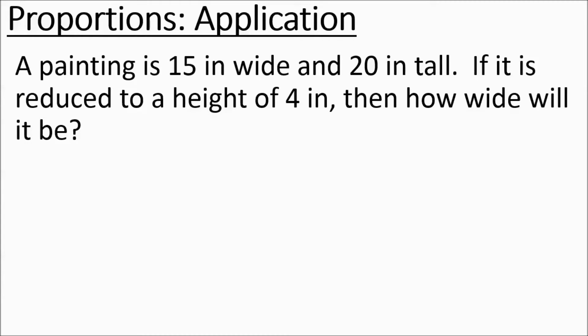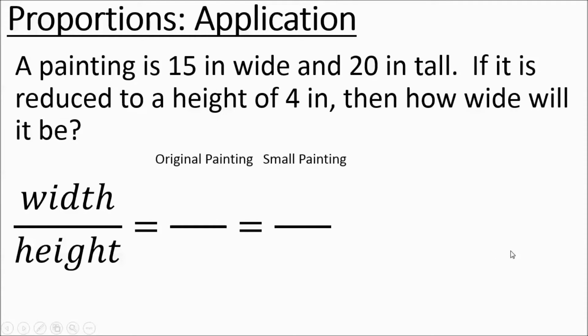You want to set up what I like to call a word ratio and then two blank ratios. This part is going to be our proportion and we're going to fill it in. We're going to have one ratio for the original painting and one ratio for the small painting. We're going to take the different numbers in this problem and put them in the appropriate spots within the proportion.